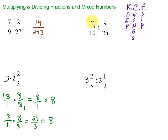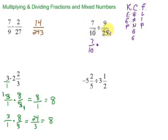That means we keep the first fraction. So we're going to go ahead and keep 7 tenths. Change the division into multiplication. And we flip, or take the reciprocal, of the second fraction. So this becomes 25 over 9 — the top and bottom numbers change places.